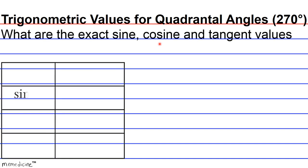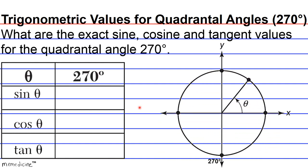What are the exact sine, cosine, and tangent values for the quadrantal angle 270 degrees? I'll give you a moment to think. Definitely press pause if you need to. And while you're thinking and coming up with your solution, in case you forgot what a quadrantal angle is, it's an angle whose terminal side is either on the x-axis or y-axis. Hence, 270 degrees is a quadrantal angle.